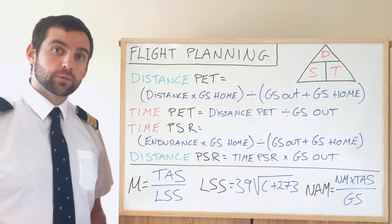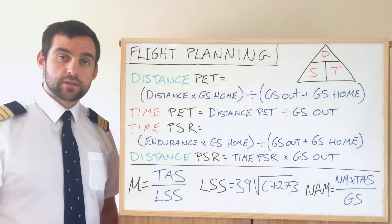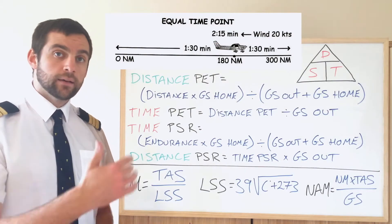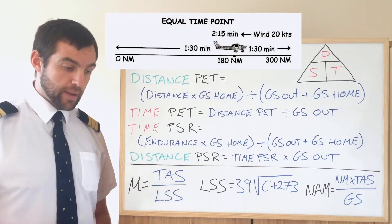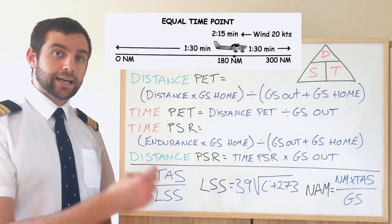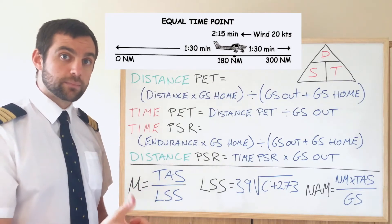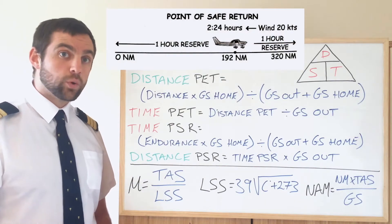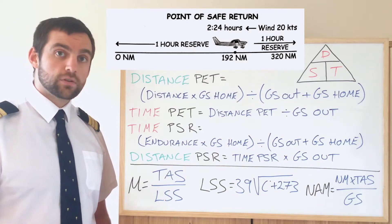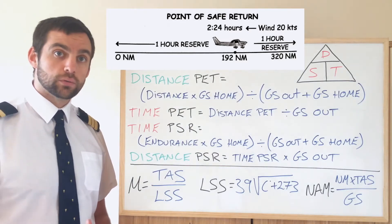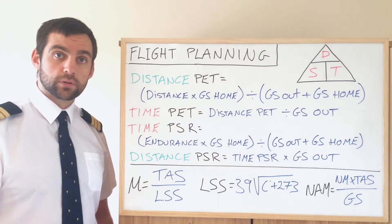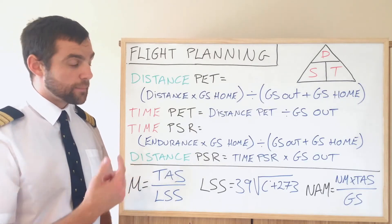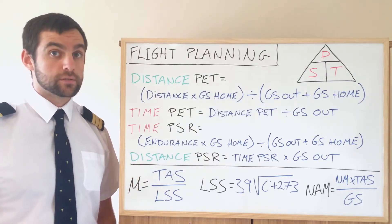Let's first talk about point of equal time and point of safe return — there are many questions in your ATPL bank about these. The point of equal time is a point between A and B where it takes equal time to go from A to that midpoint and turn back. The point of safe return is not necessarily equal in time but equal in terms of endurance, i.e. it takes into account how much fuel we have on board. In still air, the midpoint between A and B would be the point of equal time, the point of safe return, and the point of equal distance.